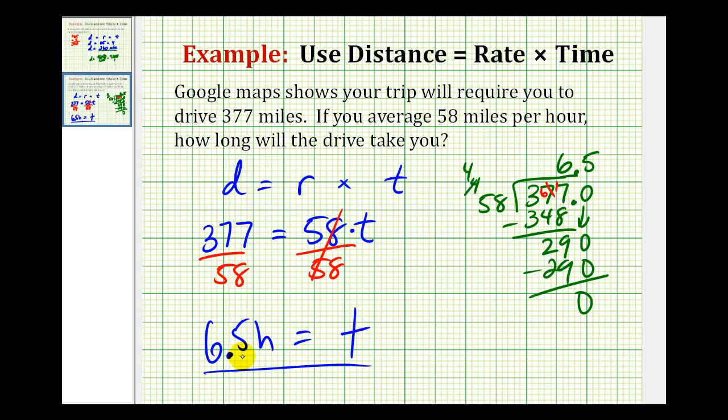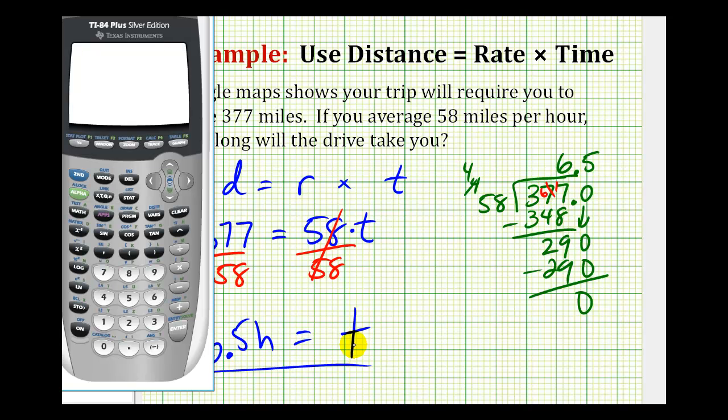Again, we haven't worked much with decimals yet. So if you wanted to perform this division on a calculator, you can feel free to do so. I'll go ahead and show it. 377 divided by 58. We'll verify our work.